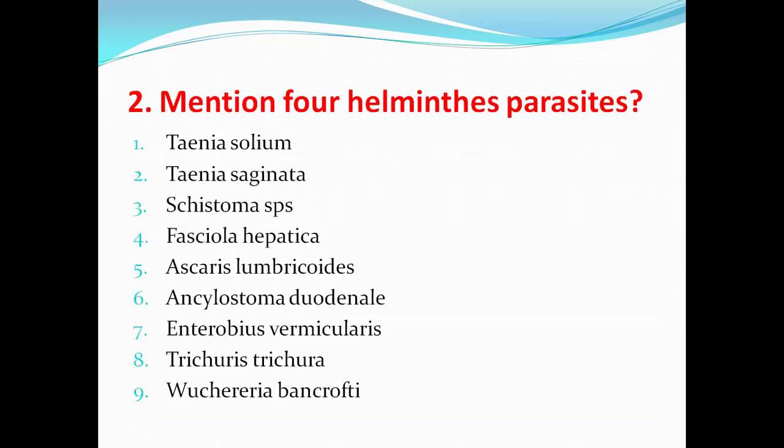Next question: mention helminth parasites. Helminths include three groups: cestodes, nematodes, and trematodes. Examples include Taenia solium, Taenia saginata, Schistosoma species, Fasciola hepatica, Ascaris lumbricoides, Ancylostoma duodenale, Enterobius vermicularis, Trichuris trichiura, and Wuchereria bancrofti. All these are examples of helminths.